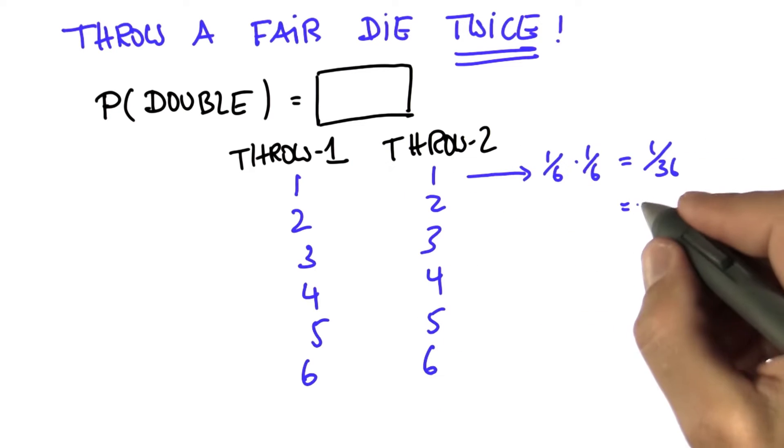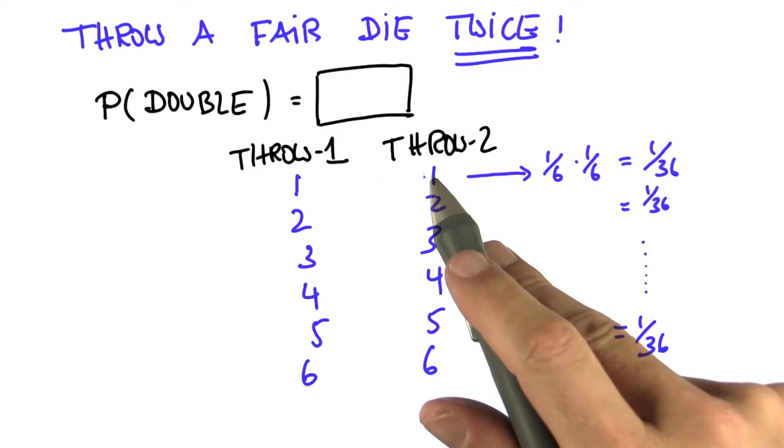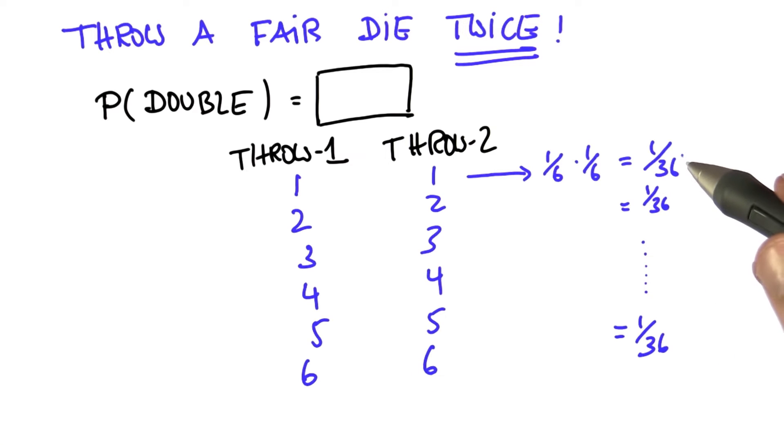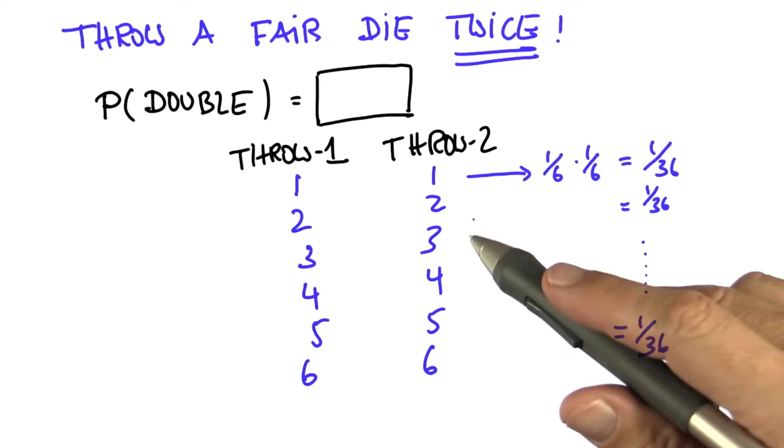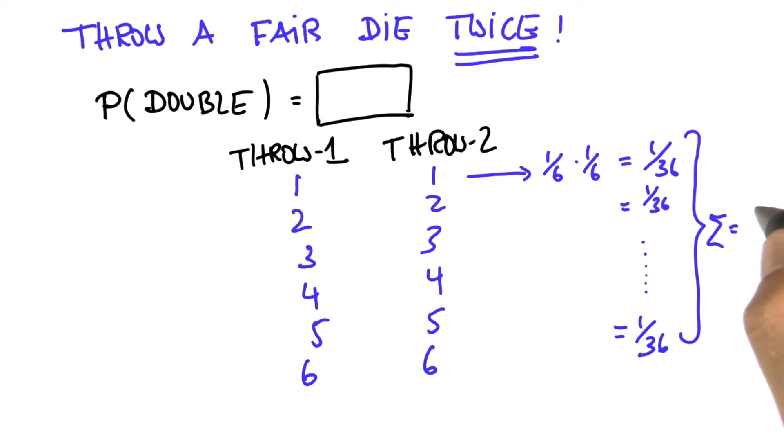The same logic applies everywhere. So for all of these six outcomes, I have a 1/36 chance this outcome will materialize. Adding them all up gives me 6/36. Why? Because I get 6 times 1/36.